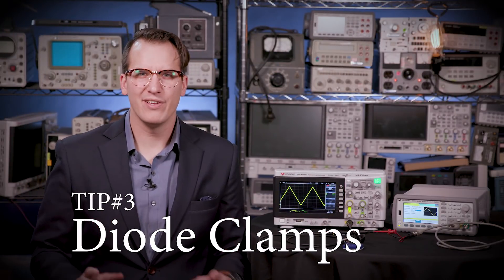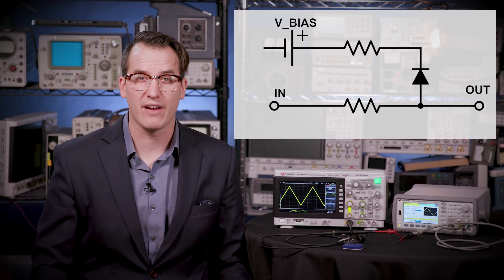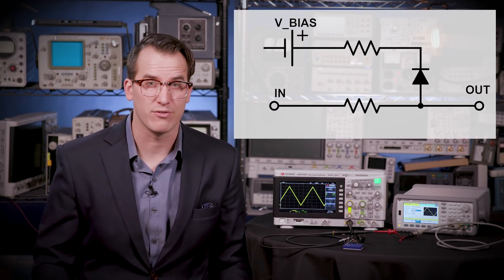Diode clamps. You can use diodes to limit the range of a signal. You can essentially pre-clip the signal by connecting a diode to a reference voltage or a voltage divider.